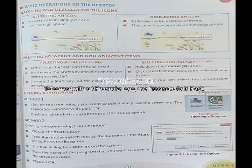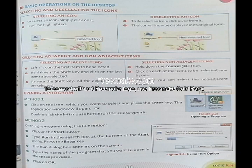To open a program, simply click on the icon you want to select and press the enter key — it will execute immediately. Otherwise, you can go to the start button and use the run option. In the run option, a text box appears. You type the name of the software and press OK — same result as selecting an icon and pressing enter.